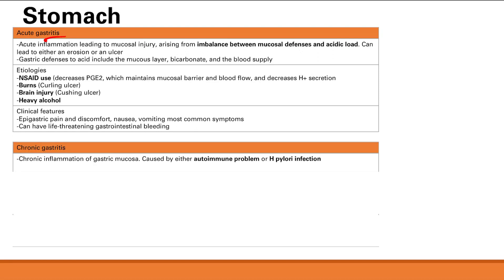Next is chronic gastritis. Chronic gastritis is, as you can tell, chronic inflammation. You can get chronic inflammation from either an autoimmune problem or H. pylori infection. Note that H. pylori is a much more common cause of chronic gastritis. Those previous etiologies cause acute inflammation, not chronic.